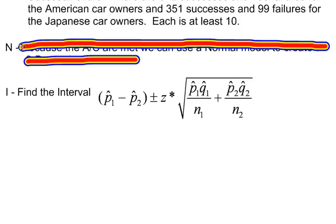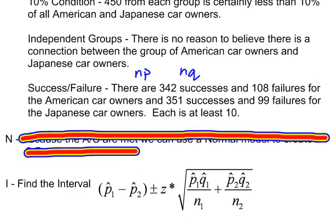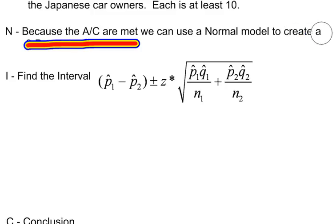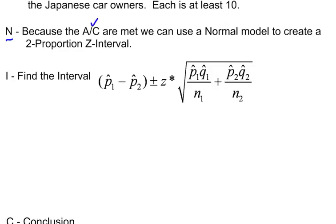Now that my assumptions and conditions are met, I need to tell the reader how I'm going to use this. Because the assumptions and conditions have been met, we can use a normal model to create a two-proportion Z interval. I'm telling the reader what type of model I'm going to use — always tell the reader what model you are going to use. This is going to be a two-proportion Z interval, not a two-sample mean, not a one-proportion Z interval, but a two-proportion Z interval.